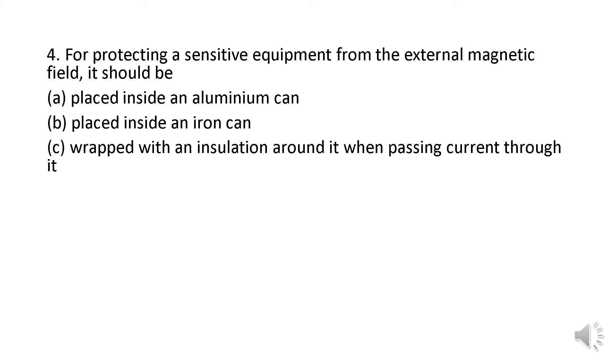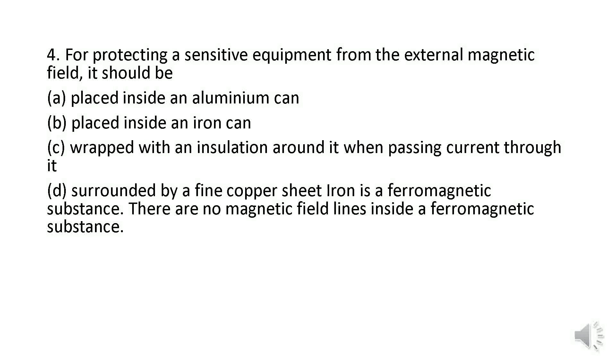Here we have the fourth question. For protecting sensitive equipment from an external magnetic field, it should be: option (a) placed inside an aluminum can, option (b) placed inside an iron can, option (c) wrapped with insulation around it when passing current through it, or option (d) surrounded by a fine copper sheet. Iron is a ferromagnetic substance, and there are no magnetic field lines inside a ferromagnetic substance.